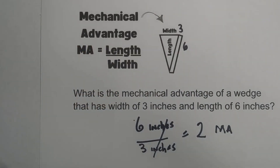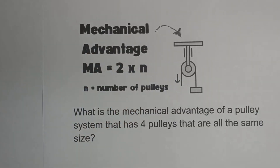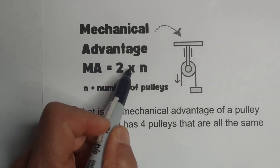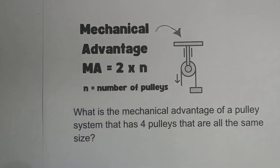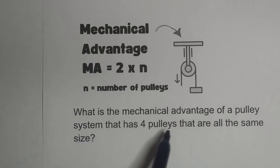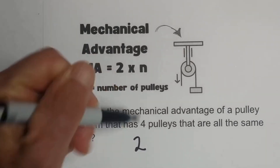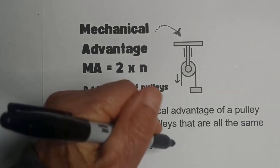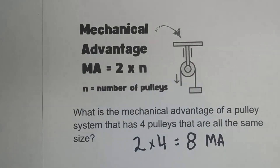Now let's look at a system of pulleys. With pulleys, assuming they are all the same size, the mechanical advantage equals 2 times n, where n equals the number of pulleys. What's the mechanical advantage of a pulley system with 4 pulleys all the same size? We go 2 times 4, and 2 times 4 is 8. That is the mechanical advantage.